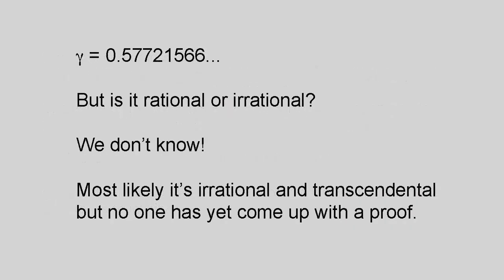The value of gamma, which starts off as 0.57721566, has been calculated by computer to more than 100 billion decimal places. Surprisingly, though, we don't know what kind of number gamma actually is.